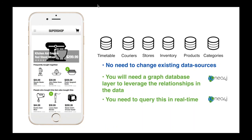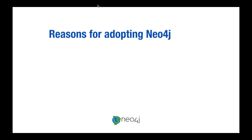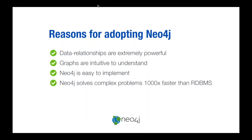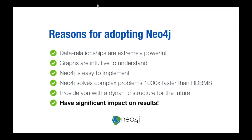To sum up: companies use Neo4j because they realize that data relationships are extremely powerful. Graphs are very intuitive to understand and to model, making them surprisingly easy to implement. From a technical point of view, Neo4j solves complex problems up to a thousand times faster than a relational database management system. And with the flexibility of a graph database, you provide your systems and applications with a dynamic structure for future user experience development and innovation — all of which has significant impact on results.